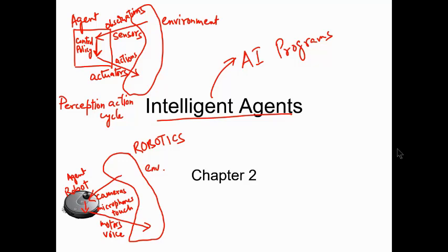Today's lecture is about Chapter 2. The topic is intelligent agents. In AI, intelligent agents play a very important role because we have intelligent agents that always interact with the environment.